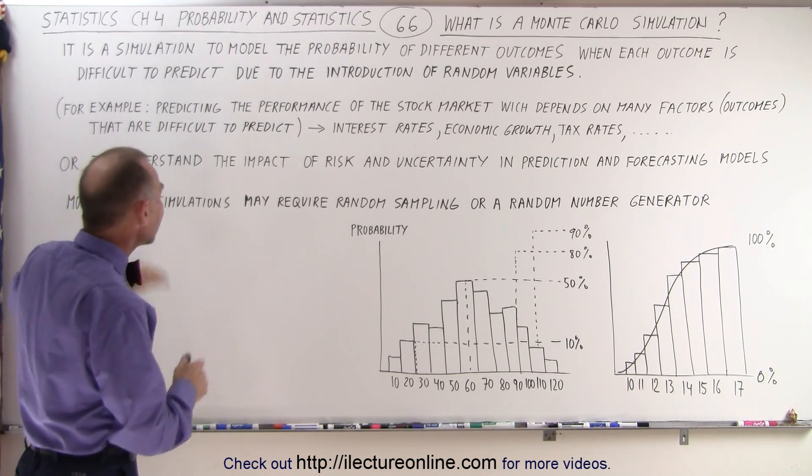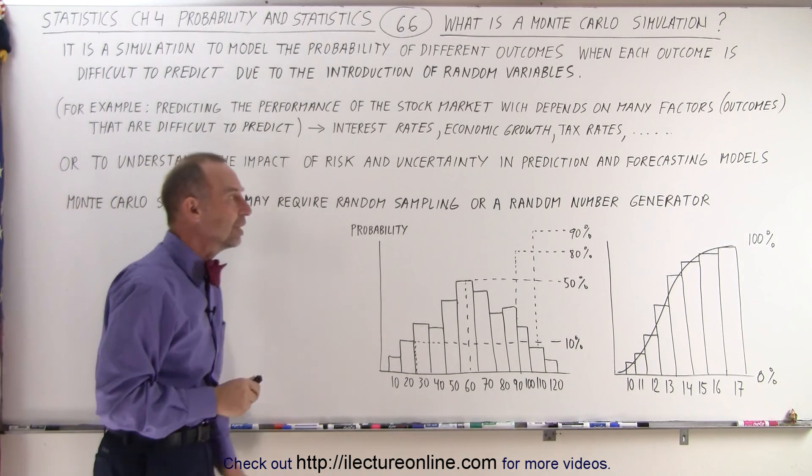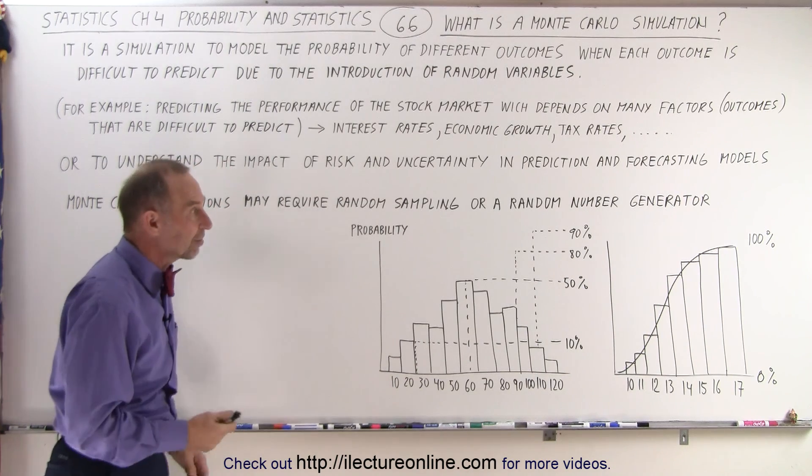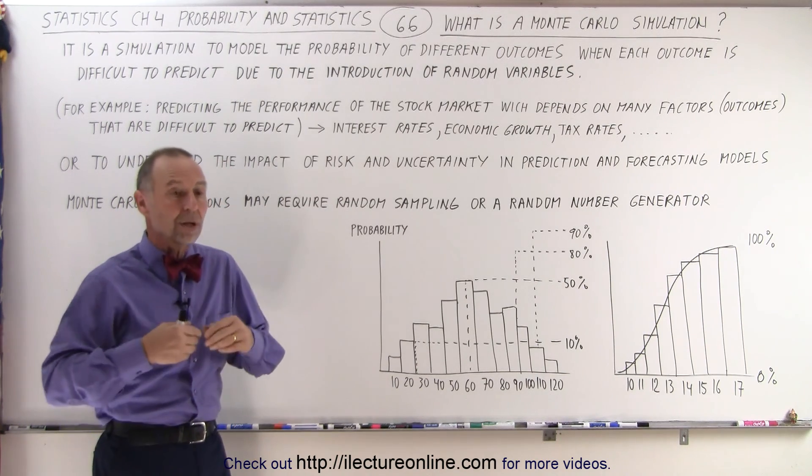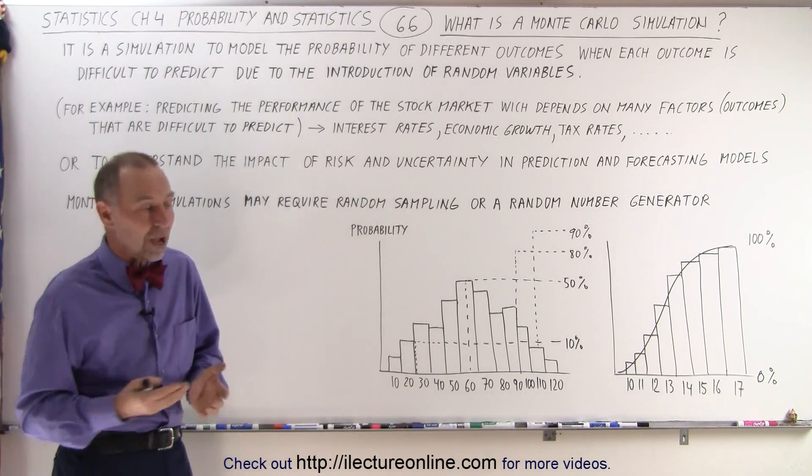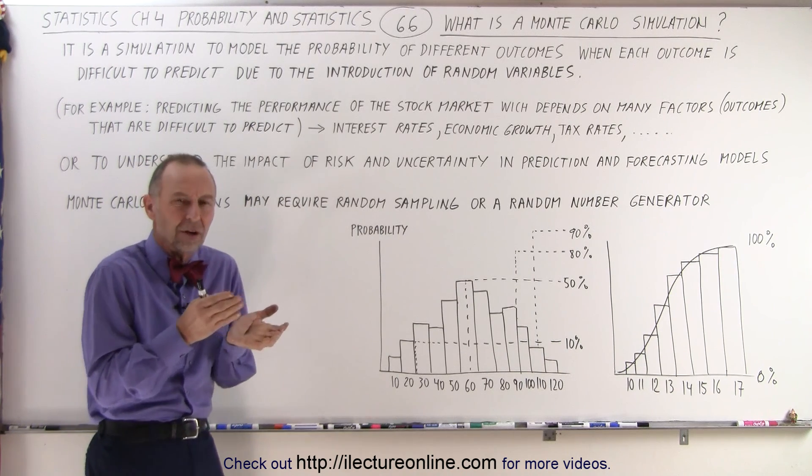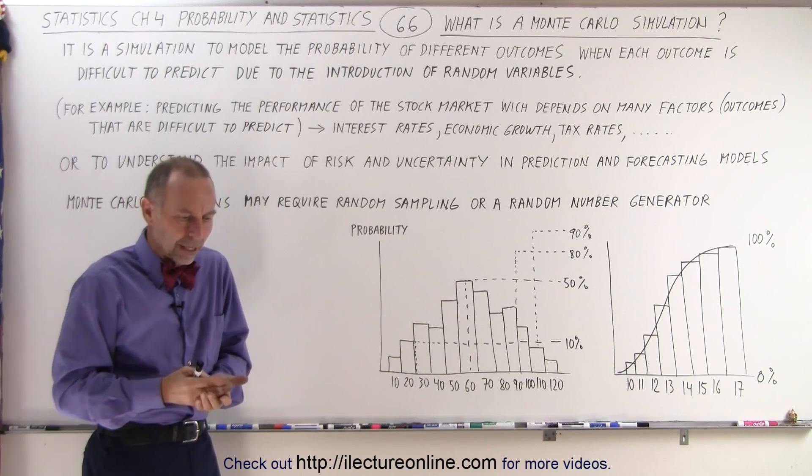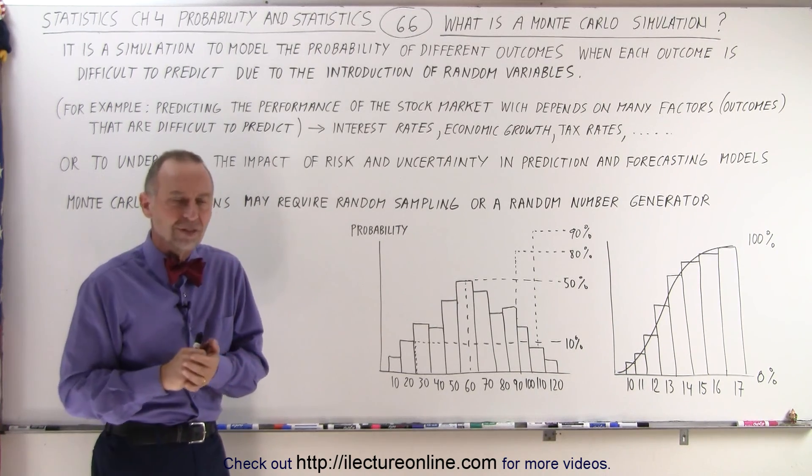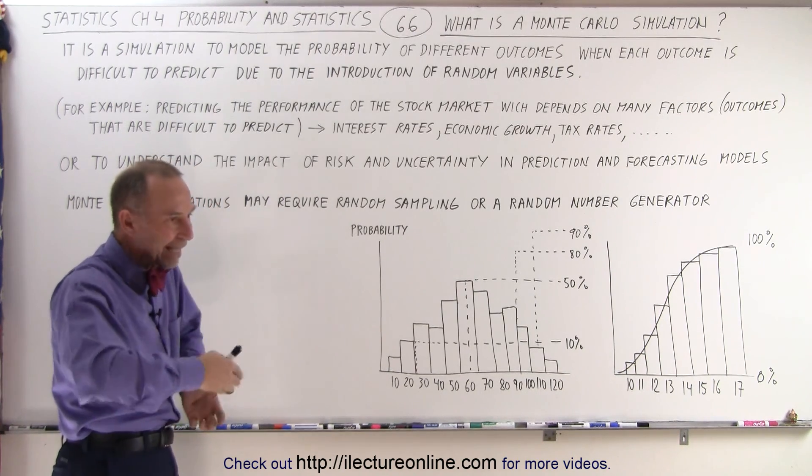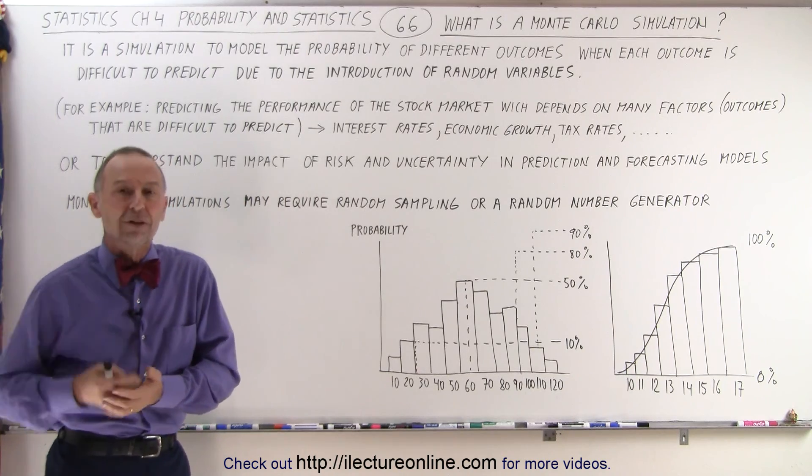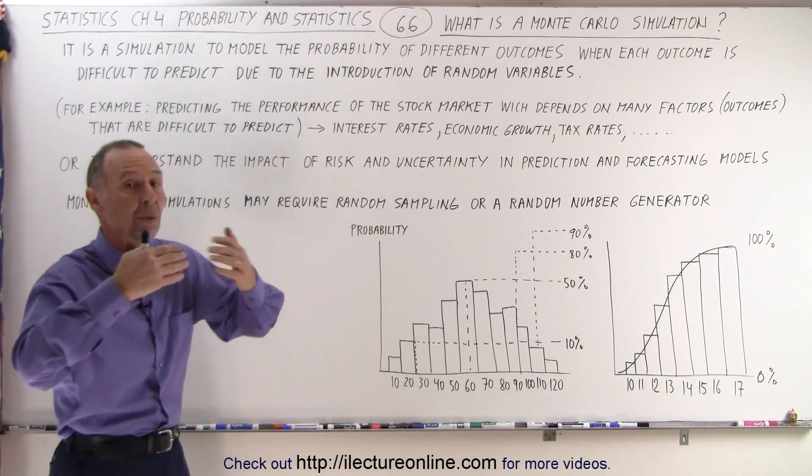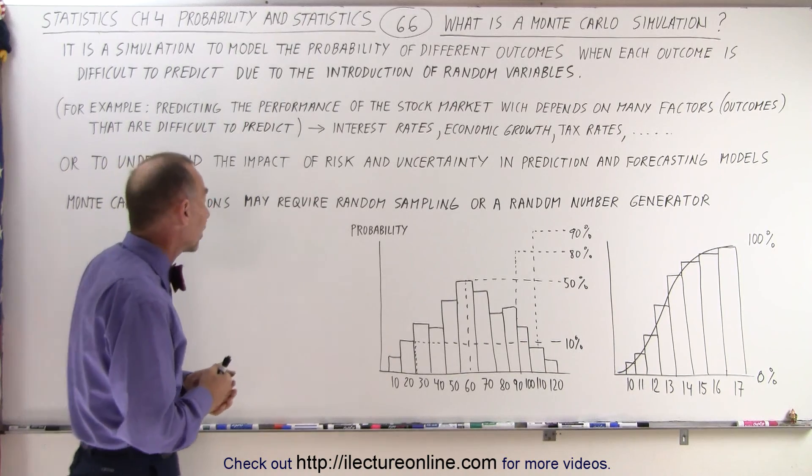We can also use it to understand the impact of risk and uncertainty in predicting and forecasting models. For example, we want to predict how long it's going to take to do a job. We want to predict what the risks are if we sum up all the possible risks that we have on a particular project and then vary the severity of those risks and the impact of those risks and then see what that would do to the overall outcome of the project.